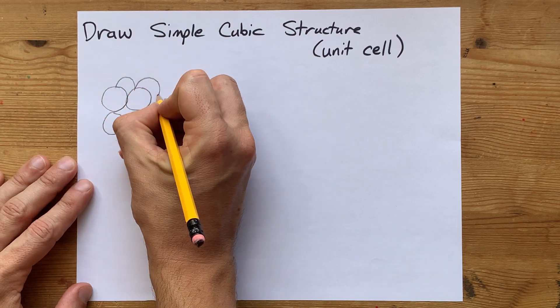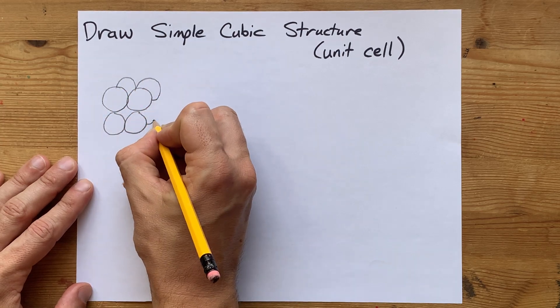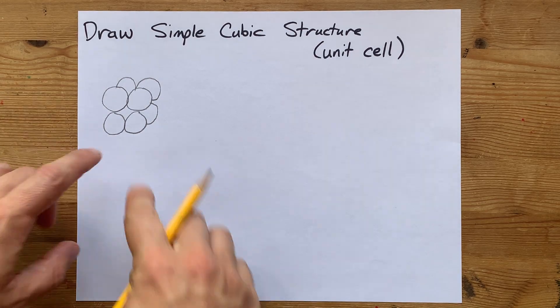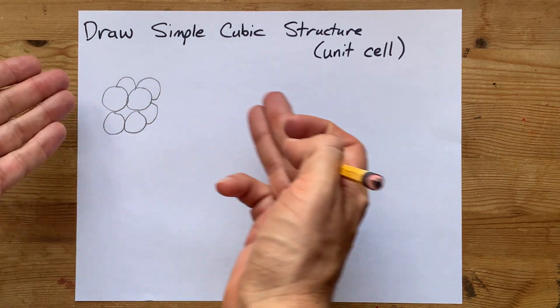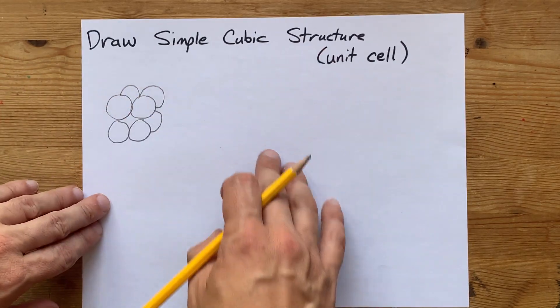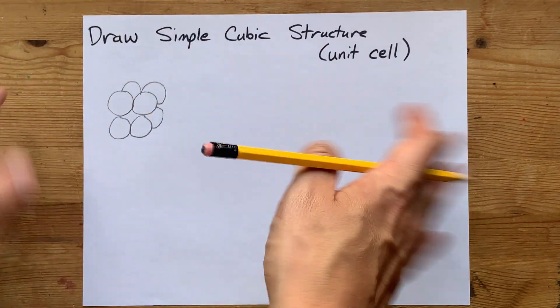If I was going to try to draw this in three dimensions for you, it would be just like this. It's like stacking two by two by two. In a real crystal, it's like infinity by infinity by infinity, or trillions by trillions.